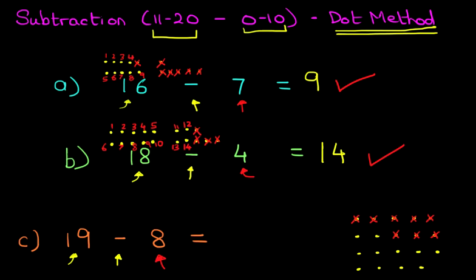Now all we need to do is count how many dots there are remaining. So count with me and let's do this: 1, 2, 3, 4, 5, 6, 7, 8, 9, 10, 11. There are 11 dots remaining. So 19 minus 8 equals 11.